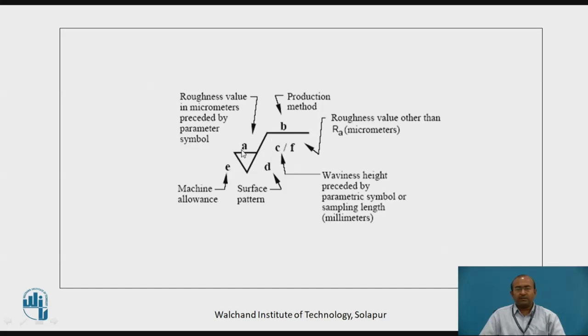Now we will see the resemblance of alphabets and its position with respect to the information. At location A, position A, roughness value in micrometers preceded by parameter symbol. B is the production method to be mentioned like milling, grinding, etc. At the location C, and oblique F or in bracket F many a time, C stands for sample length, sampling length in millimeters. It is very important to remember that it is in millimeter. For this location, surface roughness value other than Ra micrometers. So there is a surface roughness grade symbol. E means machining allowance which is to be mentioned in millimeter and the surface pattern is to be mentioned over here with the symbol.